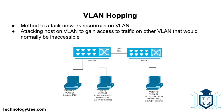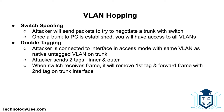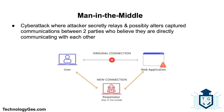VLAN hopping is a computer security exploit — a method of attacking network resources on a VLAN where an attacking host on one VLAN gains access to traffic on other VLANs that would normally not be accessible. There are two primary methods: switch spoofing, where the attacker sends packets to negotiate a trunk with the switch gaining access to all VLANs; and double tagging, where the attacker sends two tags — an inner VLAN tag for the target VLAN and an outer tag for the native untagged VLAN — causing the switch to strip the outer tag and forward the frame on its trunk interface, effectively jumping from the native VLAN to the victim's VLAN.